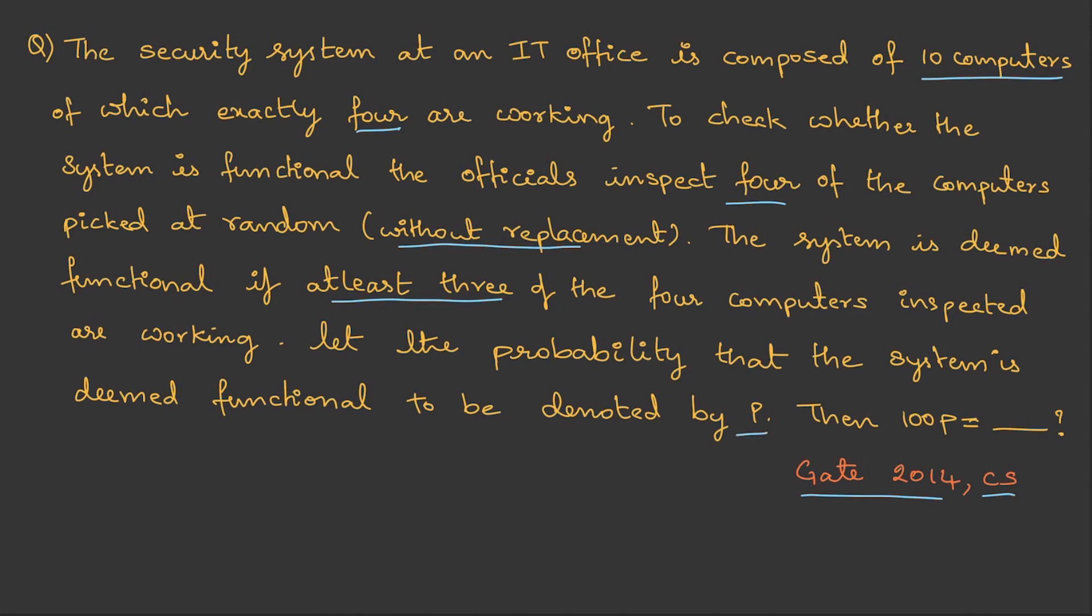So, we basically need to find the probability value p, then we need to multiply with 100. Now, again, if you carefully observe, there are two categories: one is working, the other one is non-working. And secondly, they mention without replacement. Therefore, this is hypergeometric distribution.